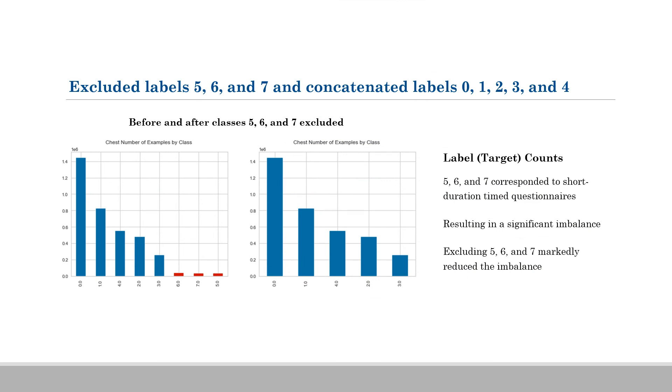Here I decided to exclude 5, 6, and 7, because I didn't think they were adding any value whatsoever to the models, and they were also causing a lot of imbalance. So this is a chart of the before and after removing them or excluding them actually.